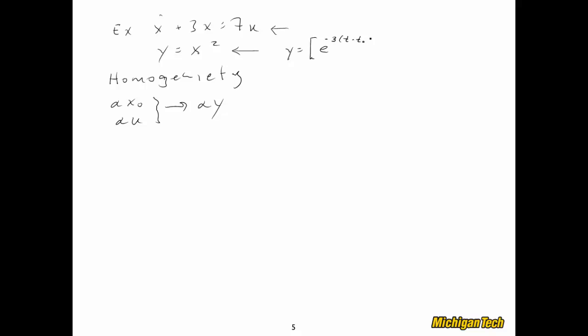It would be e to the negative three, t minus t zero, x zero, plus seven, e to the negative three t, the integral from t zero to t, e to the three tau, u(tau), d tau. And there we go. And we have to square the whole thing. So there is our expression for y. And so now here, let's do the check.